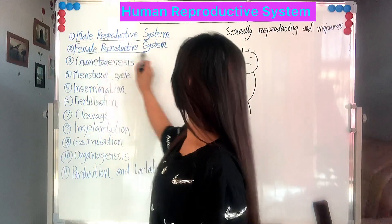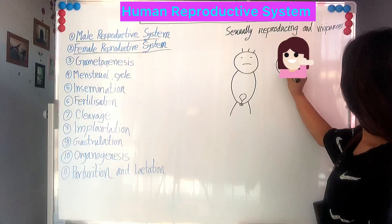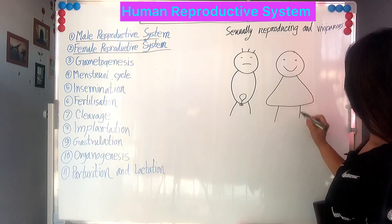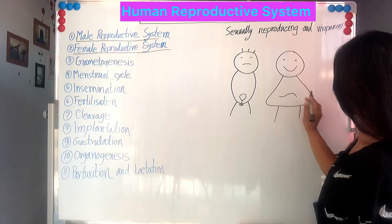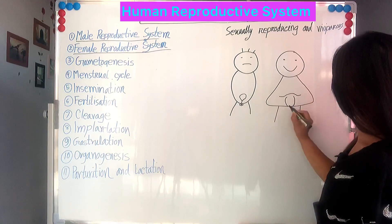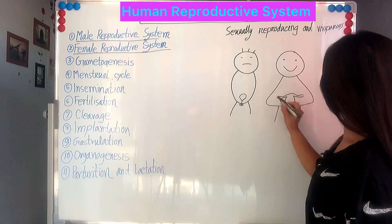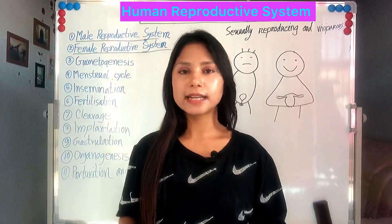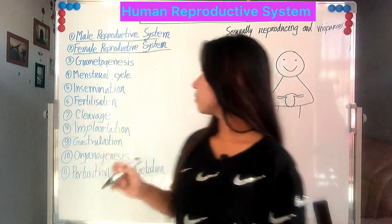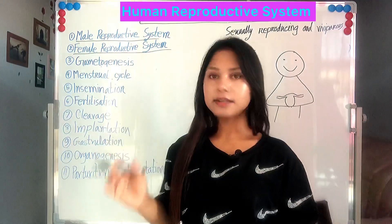After the male reproductive system, we will learn the female reproductive system. This is a female with uterus, external genitalia, and internal genitalia. In the female reproductive system, we will learn external genitalia, internal genitalia, and its primary and secondary sex organs.